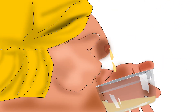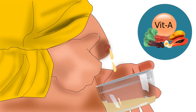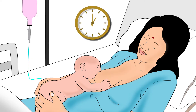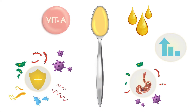Colostrum is rich in vitamin A. Colostrum is the first breast milk produced by a mother soon after delivery, and it should be fed to the baby within 1 hour of delivery. Additional benefits of colostrum have been explained in another tutorial.